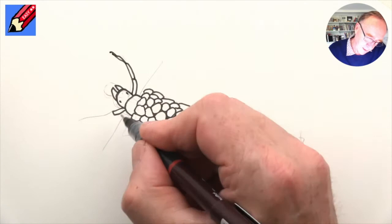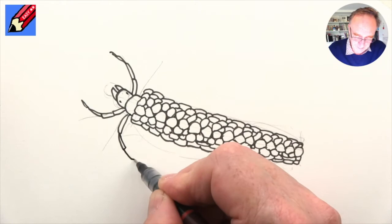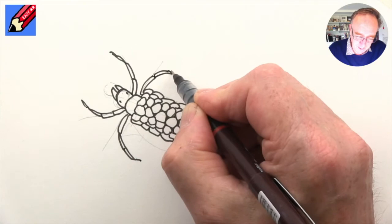And then we want little claw-y attachments on the end. Like that. And then again, we want to have something like that. Sort of one, two, three, and a little bit.